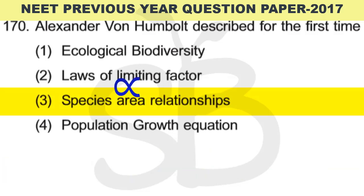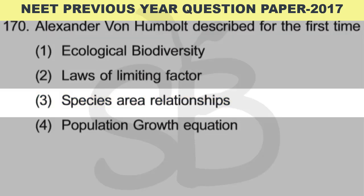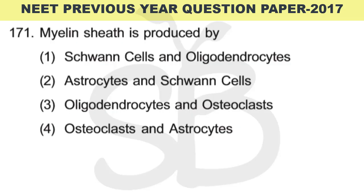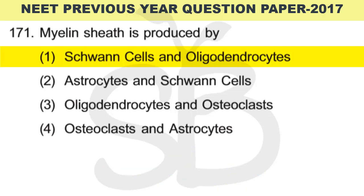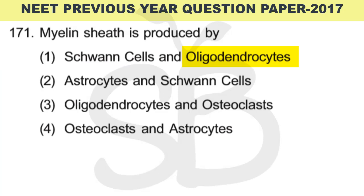Question number 171: Myelin sheath is produced by which cells? This neuron structure is discussed in Plus 1 Biology, chapter Neural Control and Coordination. The correct answer is Schwann cells and oligodendrocytes. Schwann cells produce myelin sheath in the peripheral nervous system, and oligodendrocytes produce it in the central nervous system.